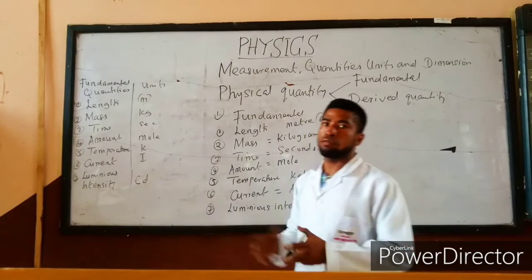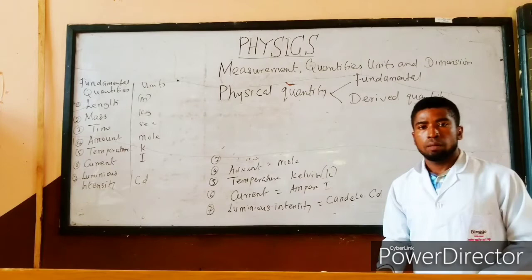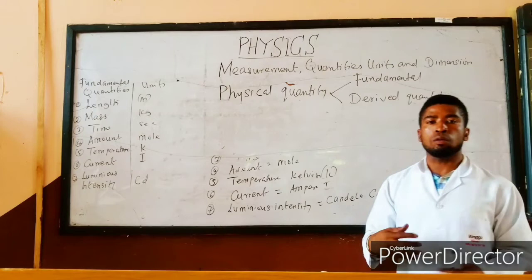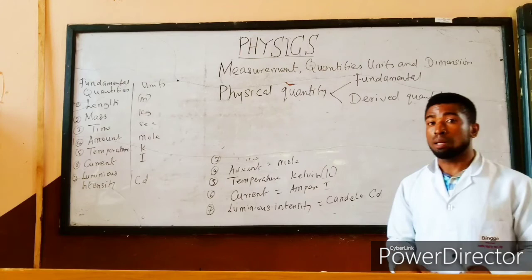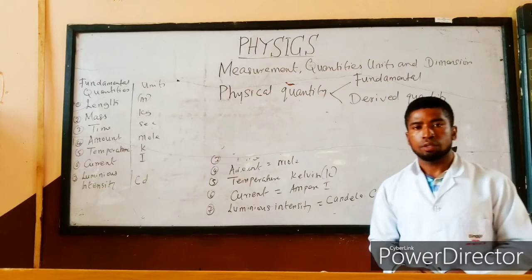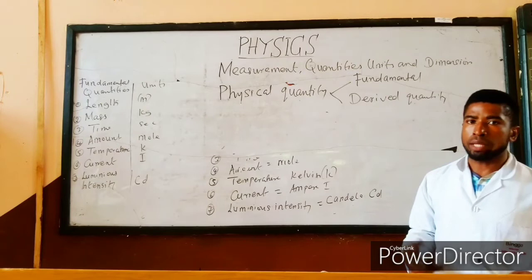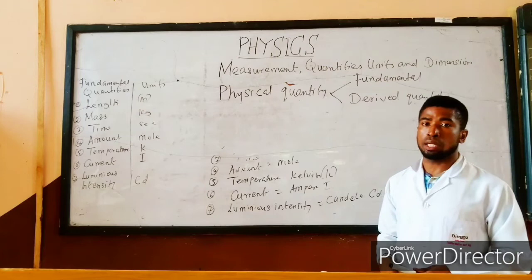Let us look at derived quantities. Derived quantities are those quantities that are obtained by combining two or more fundamental quantities. For example, speed and velocity are examples of derived quantities, because we can derive them by combining two or more fundamental quantities.